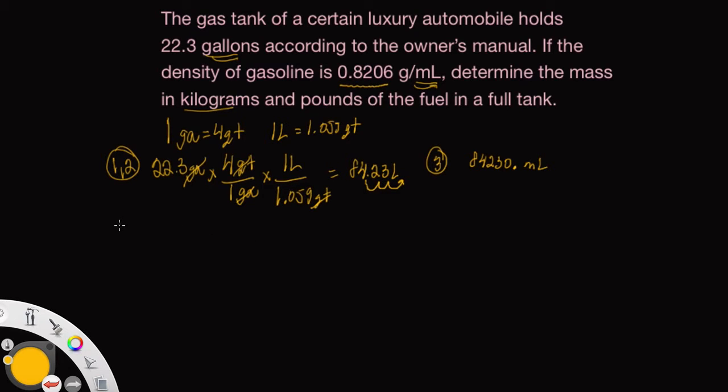In step four, we want to use density as a conversion factor. Now we have the volume in milliliters and the density in grams per milliliters. So it's rather easy to find the mass here in grams. So we have 0.8206 grams per one milliliter, which is the density.